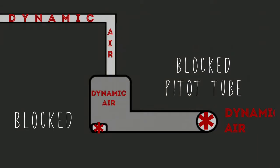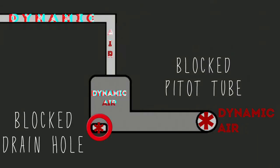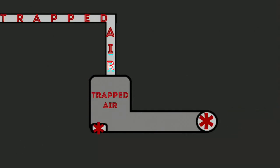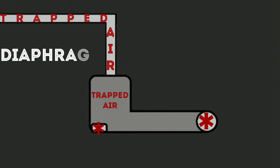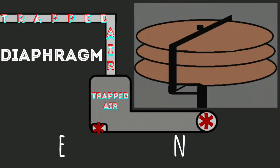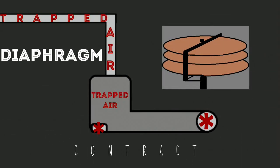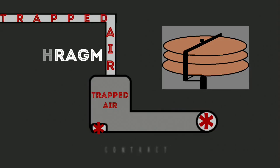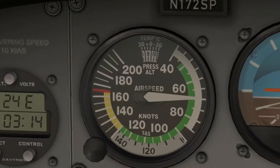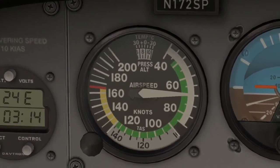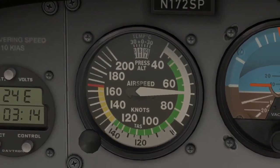If the drain hole is also blocked, the ram air inside wouldn't be able to leak out. Since the air is trapped, the airspeed indicator's diaphragm won't be able to expand if the aircraft accelerates or contract if it decelerates. This will freeze whatever the current airspeed reading is on the airspeed indicator.